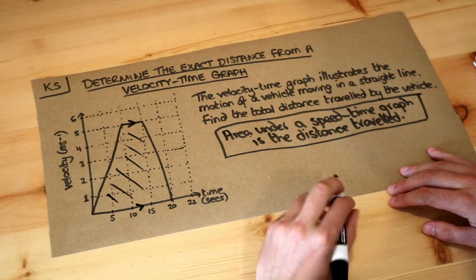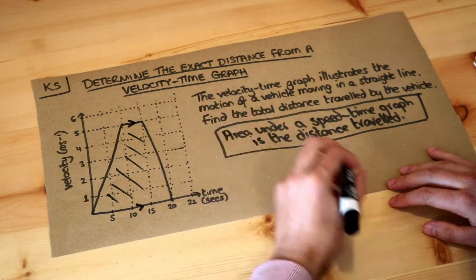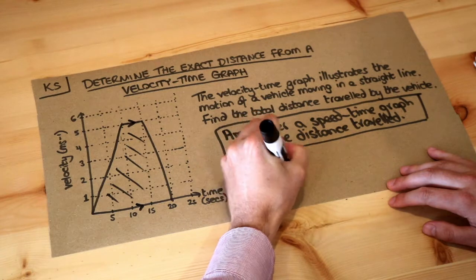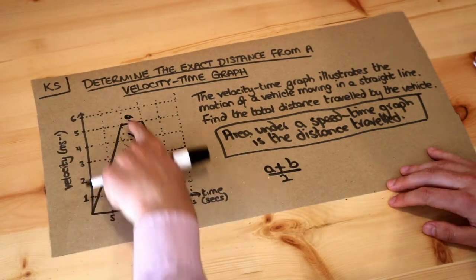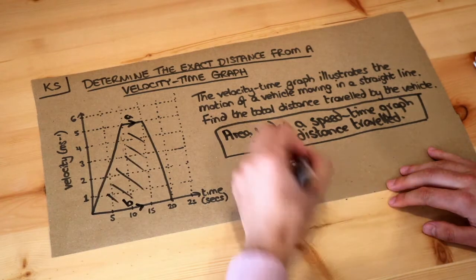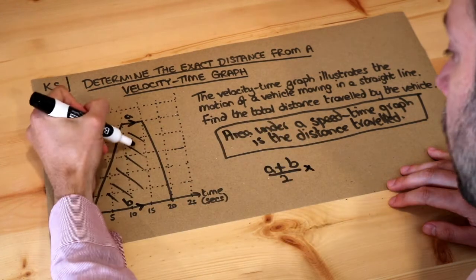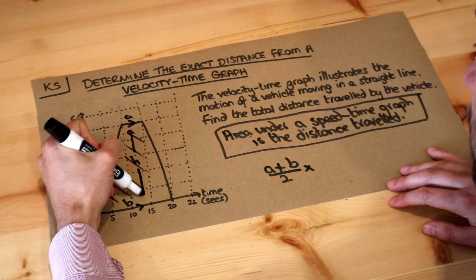And how do we find the area of a trapezium? Well the area of a trapezium is the average of the parallel sides. So if this is A and this is B, it's the average of those two parallel sides. You add them divided by 2 multiplied by the height between them.